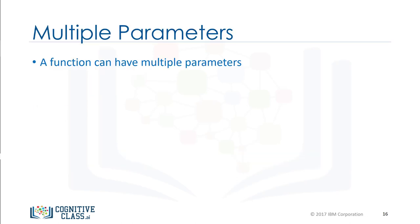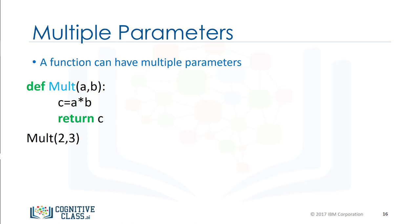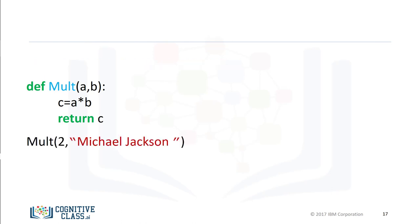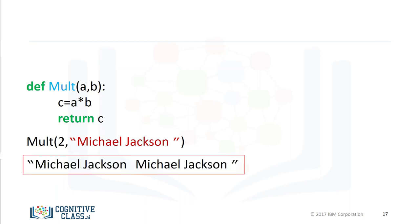A function can have multiple parameters. The function mult multiplies two numbers — in other words, it finds their product. If we pass the integers 2 and 3, the result is a new integer. If we pass the integer 10 and the float 3.14, the result is a float 31.4. If we pass in the integer 2 and the string Michael Jackson, the string Michael Jackson is repeated two times.